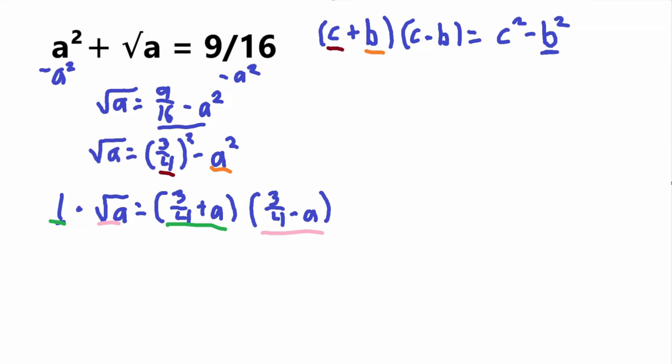If this is 1, that means 3 fourths plus a equals 1. So a equals 1 minus 3 fourths, which equals 1 fourth.